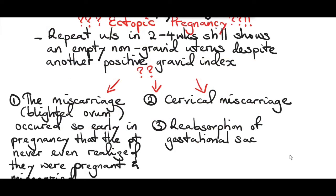It's not always an ectopic pregnancy when an ultrasound shows an empty non-gravid uterus. The expected finding should have been an empty gestational sac without an embryo. There are three explanations for this. First, the miscarriage of the blighted ovum occurred so early in pregnancy that the patient never even realized she was pregnant and had already miscarried.